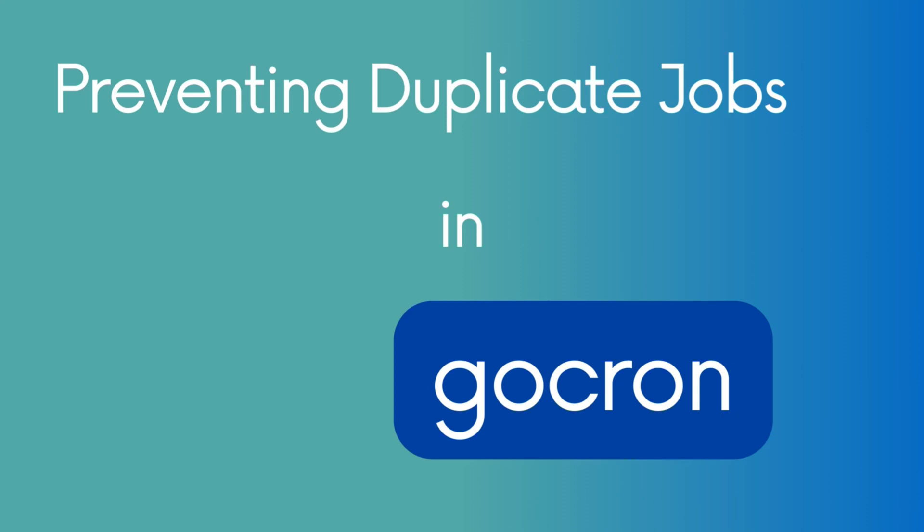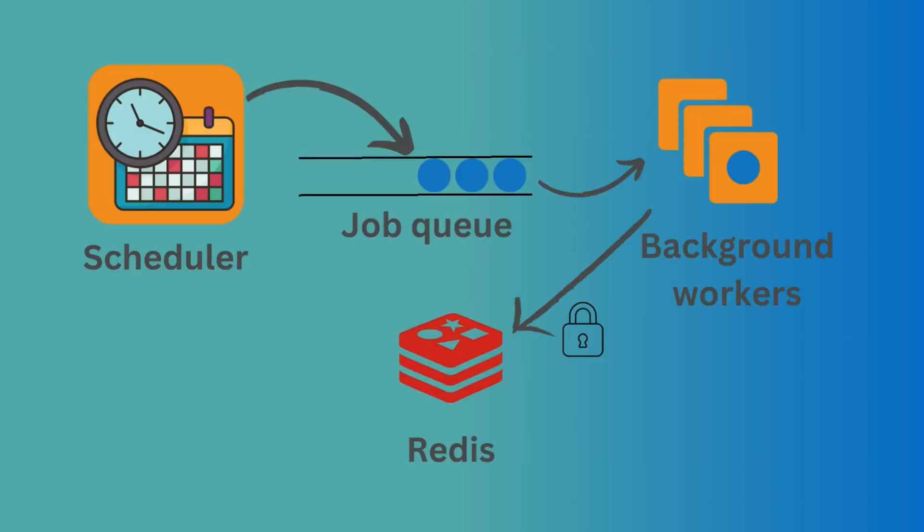Now let's talk about preventing duplicate jobs, which is a crucial concern in distributed systems. In a multi-node setup, you may have multiple instances of worker machines running jobs without coordination, which could lead to duplicate job executions. One common approach to prevent duplicates is to use a distributed lock such as Redis — we discussed this in episode 8. Before executing a scheduled job, we check if a lock exists. If not, it acquires the lock and proceeds. If the lock is already held by another instance, the job is skipped.